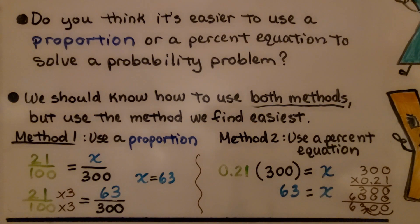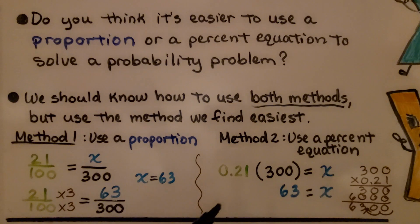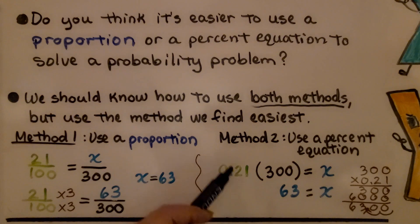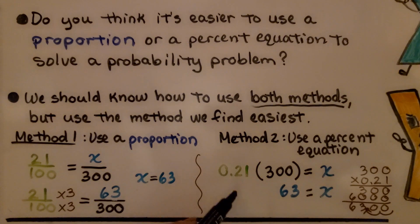Do you think it's easier to use a proportion or a percent equation to solve a probability problem? We should know how to use both methods, but use whichever we find easiest. Method 1 is using a proportion: write the percentage over 100 and find the numerator x. For the percent equation, write the percentage as a decimal and multiply it by the number of people surveyed to solve for x. The percent equation may feel easier for some, while others may prefer the proportion.